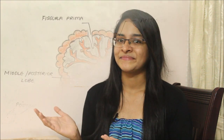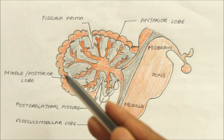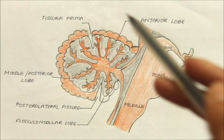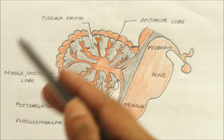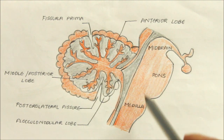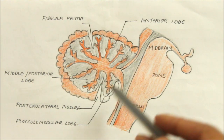Hello guys and welcome back to my channel. In this video we will be learning about the cerebellum. The cerebellum is the largest part of the hindbrain. It is situated in the posterior cranial fossa behind the pons and the medulla.